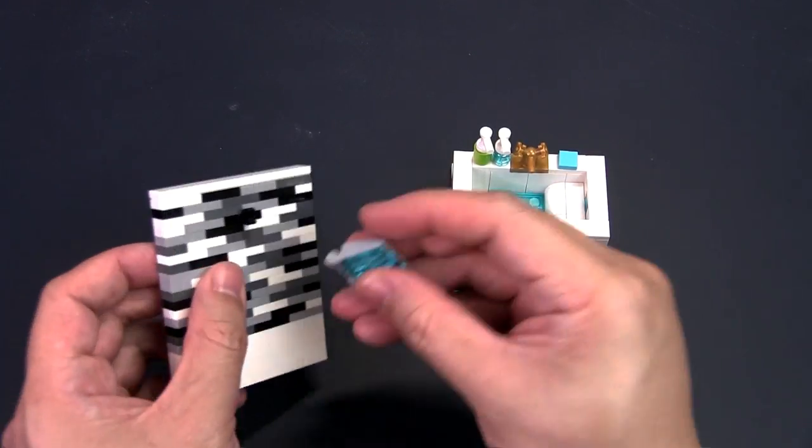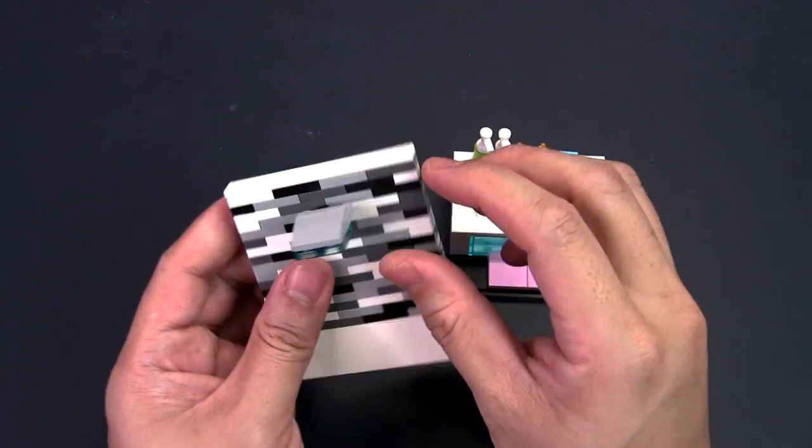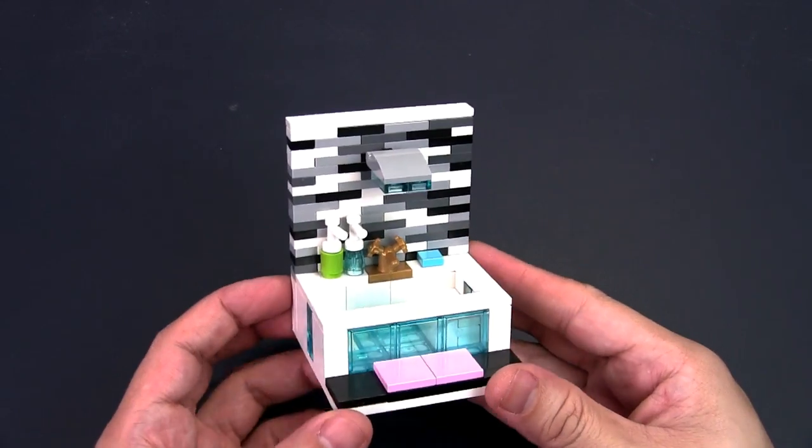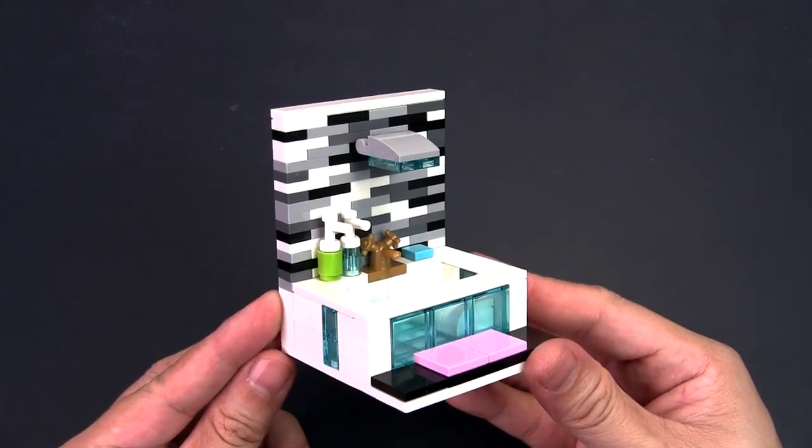Attach the shower head to the clip onto the wall and place the whole wall assembly onto the plate behind the bathtub. And there you have your luxury bathtub and shower.